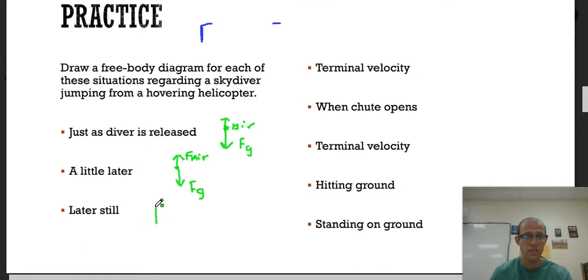Later still, we still have the force of gravity acting. And then air resistance is getting very, very large at this point. It's getting close to the magnitude of gravity until we hit terminal velocity. At that point, the force of gravity is the same as the force of the air resistance. And we are not going to speed up anymore.